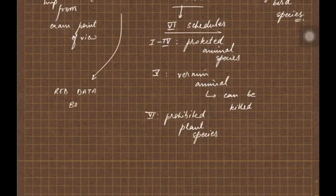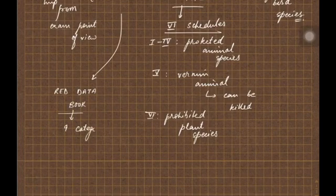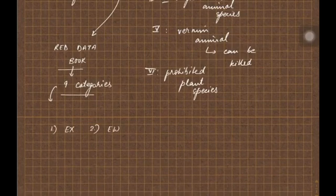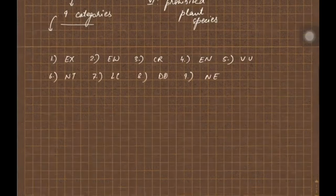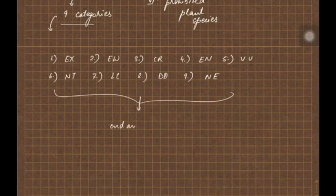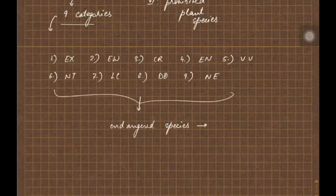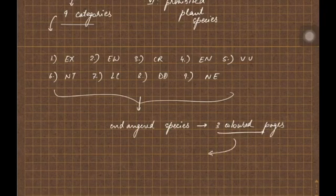If you talk about the Red Data Book, it consists of nine categories of vulnerabilities: extinct, extinct in the wild, critically endangered, endangered, vulnerable, near threatened, least concerned, data deficient, and not evaluated.